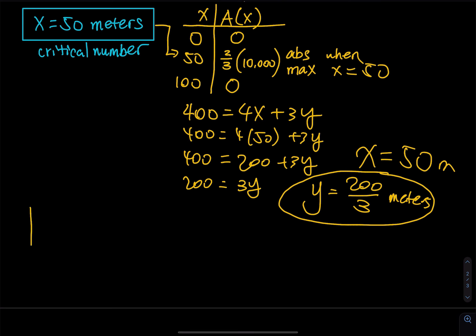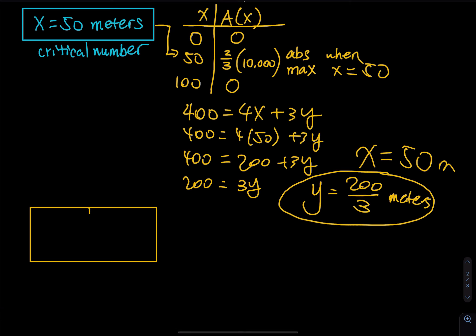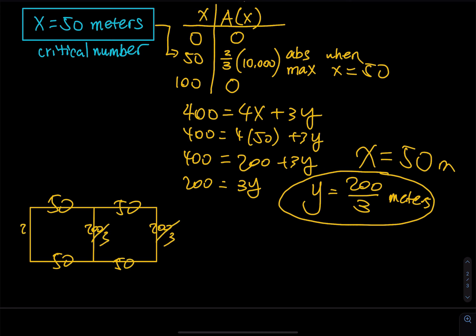Provide a picture to your boss: draw a rectangle with a divider in the middle cutting the area into two pieces. Each x side is 50, and the y sides are 200 over 3 meters. Tell your boss to follow this picture and the area of the rectangle will be maximized. That is the end of this problem. If this was helpful, give a like, share, and subscribe, and I will see you in the next lesson.